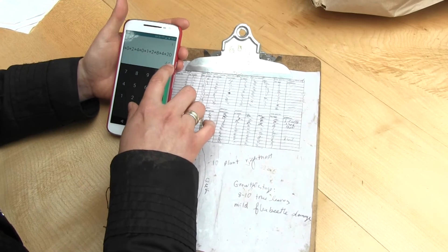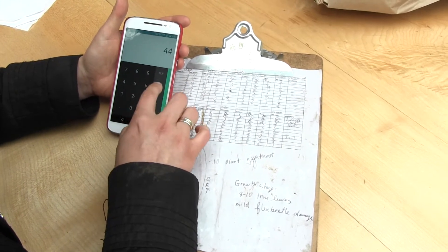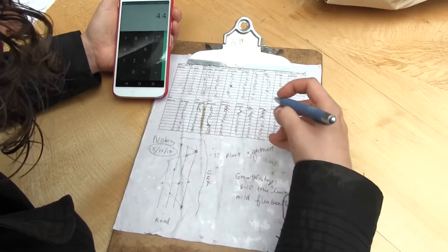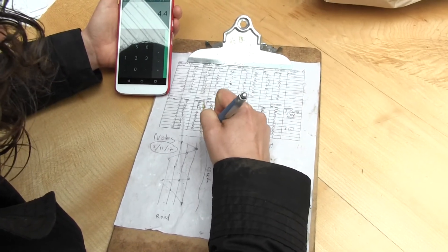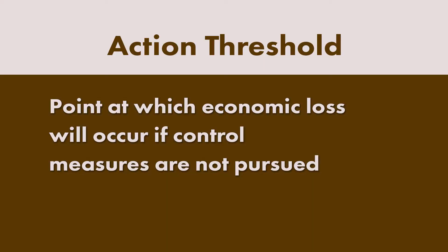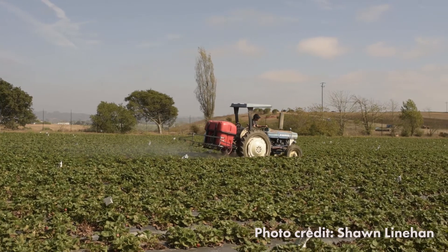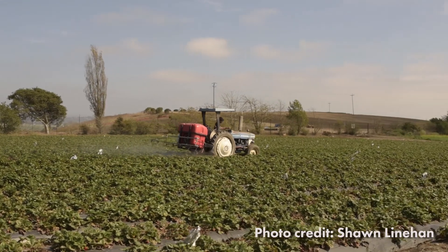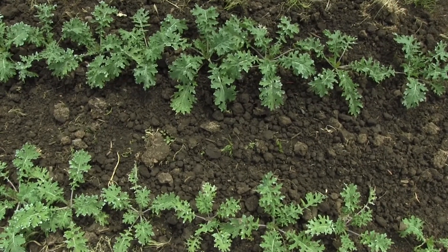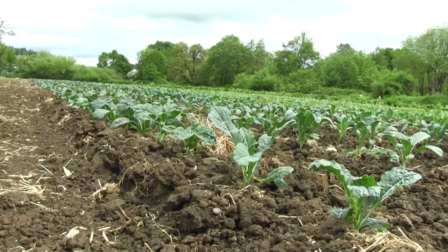Calculate the average number of aphids and predators per leaf. Reviewing these averages from visit to visit allows you to determine whether pest pressure is increasing or if beneficial insects are effectively managing the pest. This information will allow you to determine if and when you need to take action — in other words, your action threshold. Your action threshold is the point at which you will experience economic loss if control measures are not pursued, and it depends on the cost of controlling the pest, the effectiveness of your control measure, and the value of your crop.